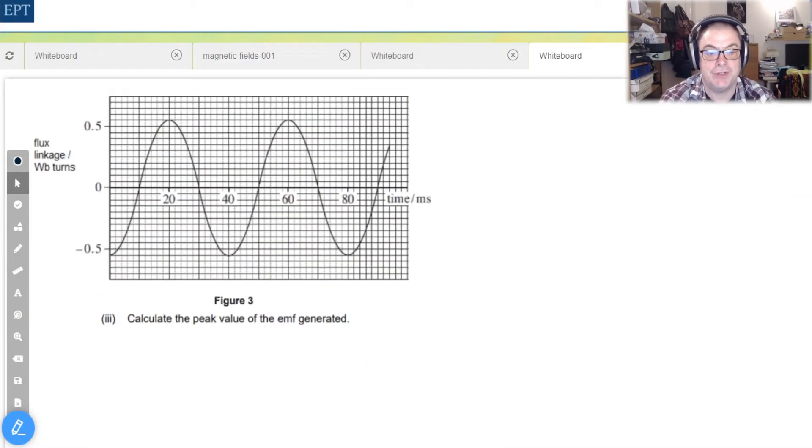Our next task then is to calculate the peak EMF generated as the coil spins. By now you should be very familiar with the fact that the EMF is equal to minus N dφ/dt which of course is Faraday's law.